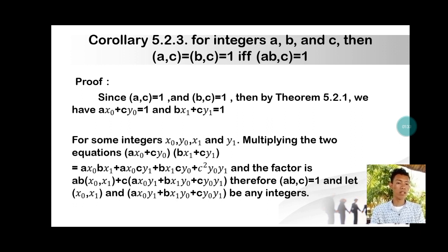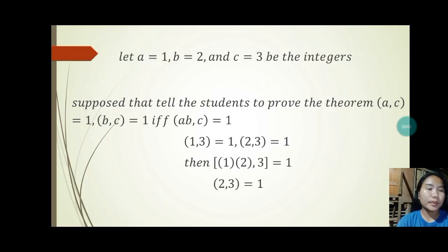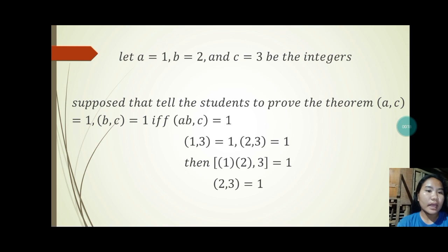Therefore gcd(ab, c) = 1, where x = ax_0y_1 + bx_1y_0 + cy_0y_1 is an integer. Example: gcd(1, 3) = 1 and gcd(2, 3) = 1, then gcd(1 × 2, 3) = gcd(2, 3) = 1. This confirms Corollary 5.2.3.